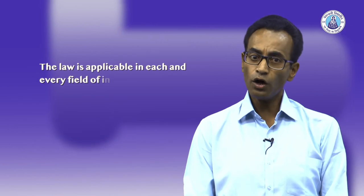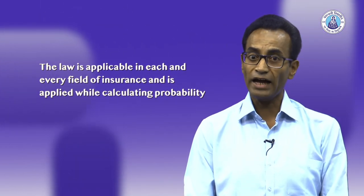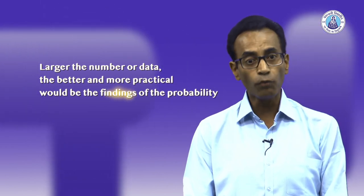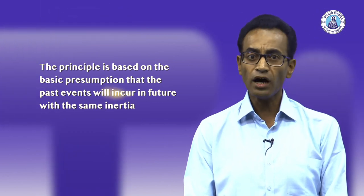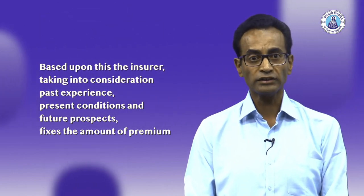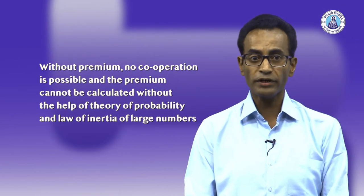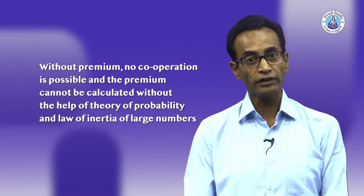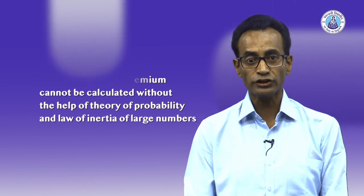Moving on to the next important principle — the principle of inertia of large numbers. The law is applicable to each and every field of insurance and is applied while calculating probability. According to this law, the larger the number of data, the better and more practical would be the findings of the probability. The principle is based upon the basic presumption that past events will occur in future with the same inertia. Based upon this, the insurer — taking into consideration past experience, present condition and future prospects — fixes the amount of premium. Without premium, no cooperation is possible, and premium cannot be calculated without the help of theory of probability and the law of inertia of large numbers. Hence, these two are two important legs of insurance.